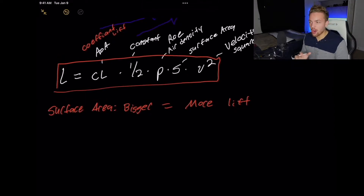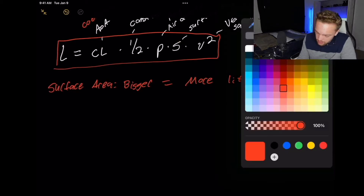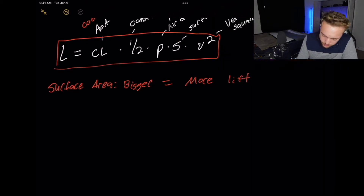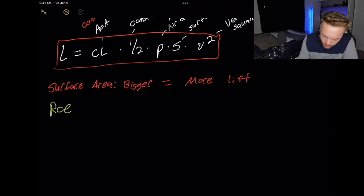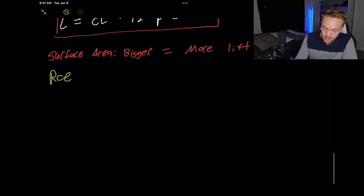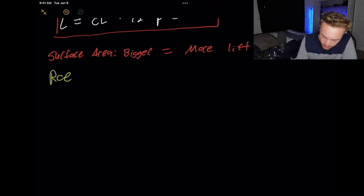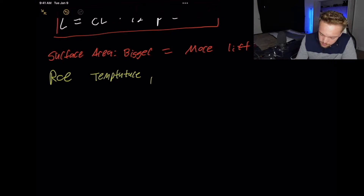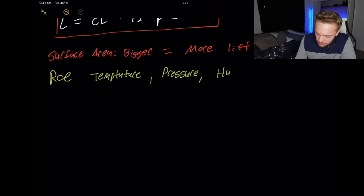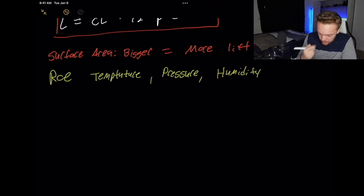Next is air density — rho. Rho equals air density. Rho, or air density, has two parts. We have temperature and pressure. You also have humidity, and we'll mention that — so pressure and then humidity.